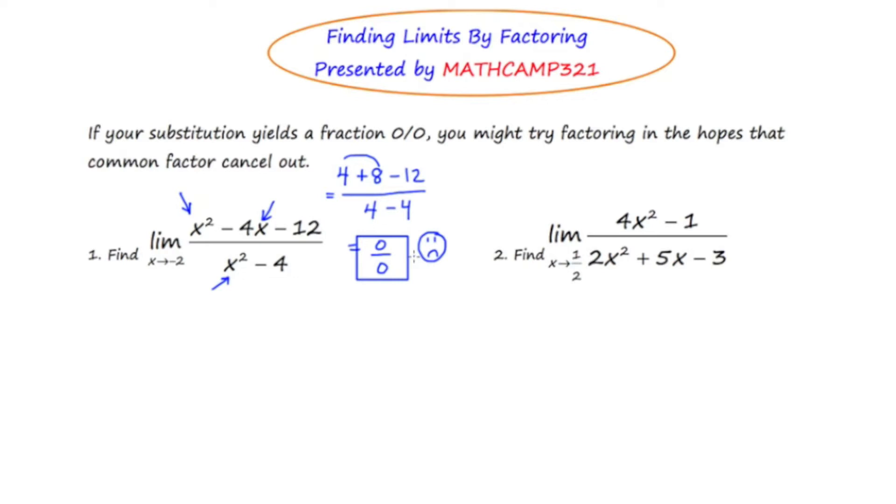So what's suggested here is that what we try is factoring. I'm going to rewrite the limit question. On the top, I'm going to factor this as x minus 6 and x plus 2. That's pretty basic algebra 1 type factoring. And the denominator is a difference of two squares, x minus 2, x plus 2.